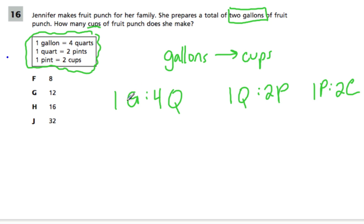And in fact, I'm going to just double this ratio. Because I know that 1 gallon is 4 quarts, so 2 gallons are 8 quarts. Great.